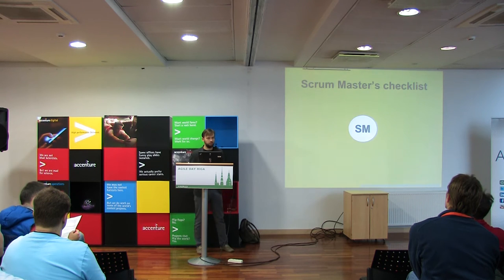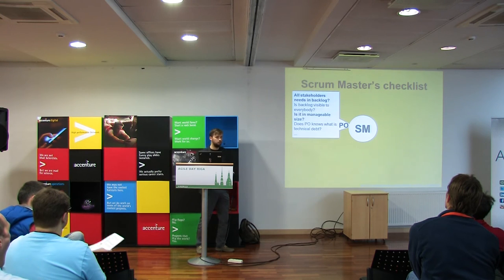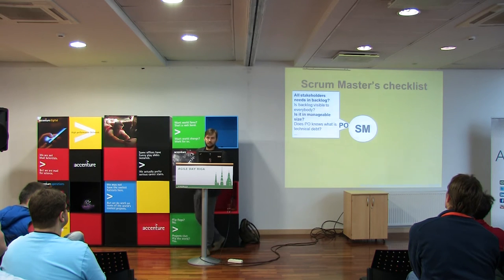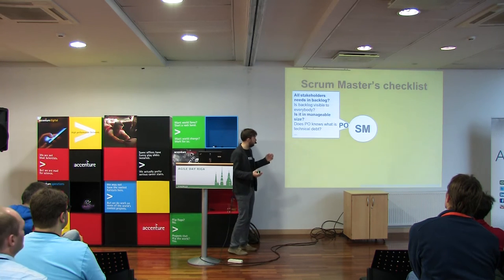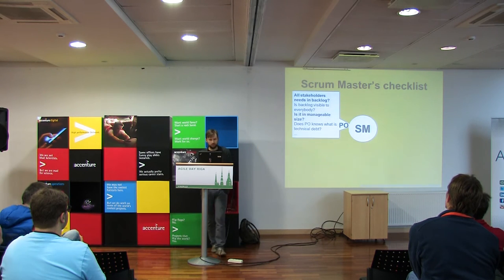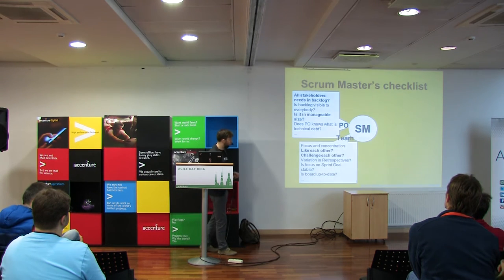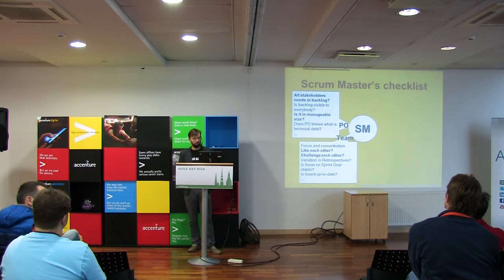Here are some examples from that checklist. When working with a Product Owner, you ask yourself: are all stakeholder needs in the backlog? Is it a manageable size? You can check the full checklist online. When working with a team, I like these ones most: do team members like each other? Do they challenge each other? Do you have variations in your retrospectives?